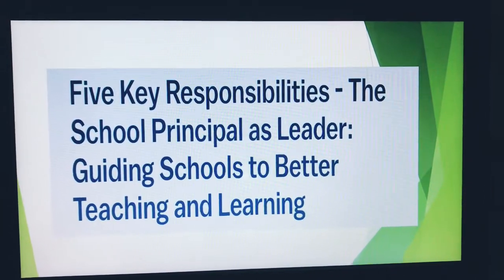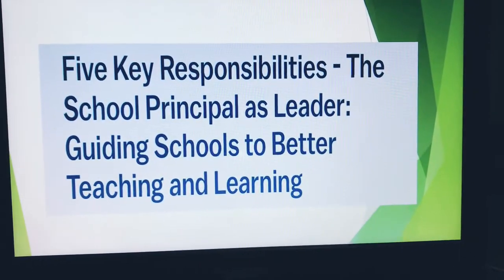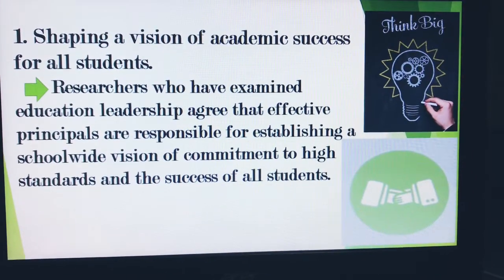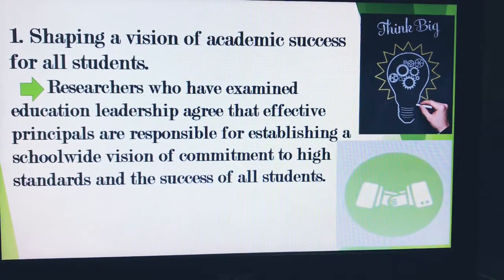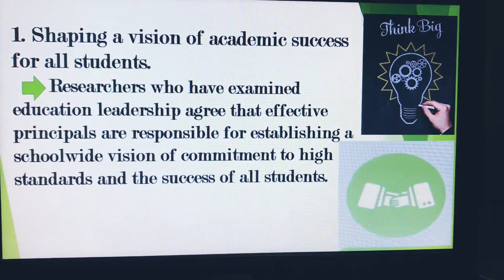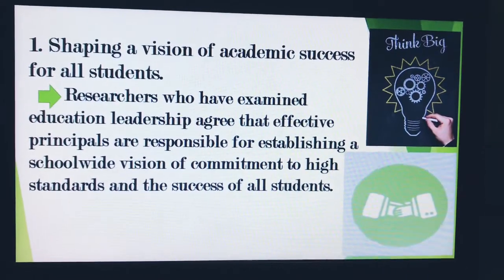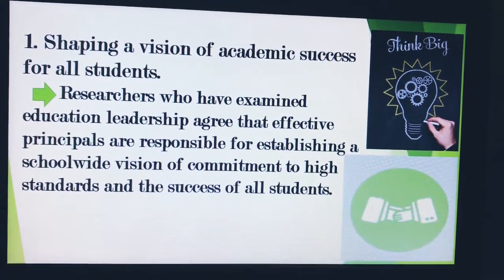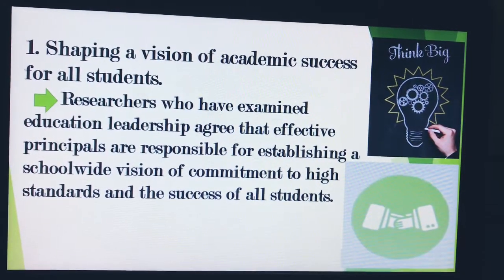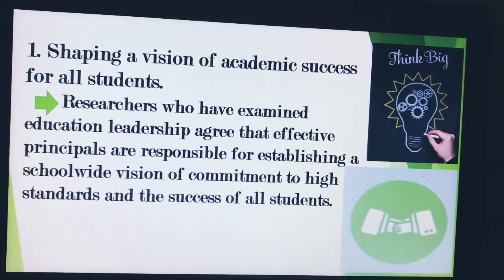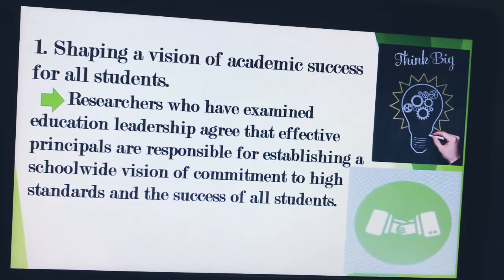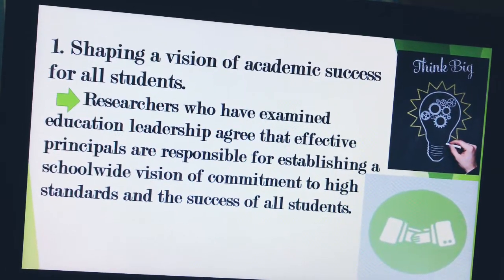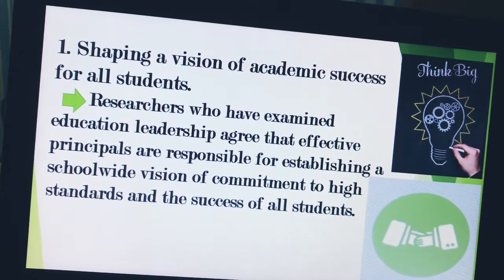The five key responsibilities of the school principal as leader: first is shaping a vision of academic success for all students. Researchers agreed that effective principals are responsible for establishing a school-wide vision of commitment to high standards and the success of all students. Implementing the school vision is a continuous process involving all stakeholders. The principal's responsibility is to communicate, inspire, and invest stakeholders in the vision and create systems that support its implementation.